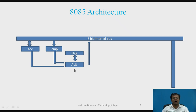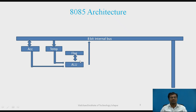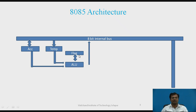After performing an arithmetic or logical operation, the subsequent flags are set or reset. The 8085 has five flags, and depending on the operation, the respective flags are set or reset.